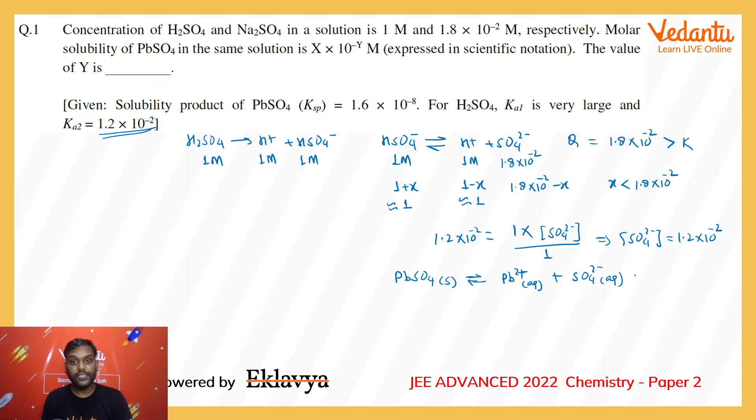Whatever the Ksp of this salt is 1.6 × 10^-8, which is quite small, which means that whatever sulfate we are getting from PbSO4 would be very very small as compared to what sulfate is already present in the solution.